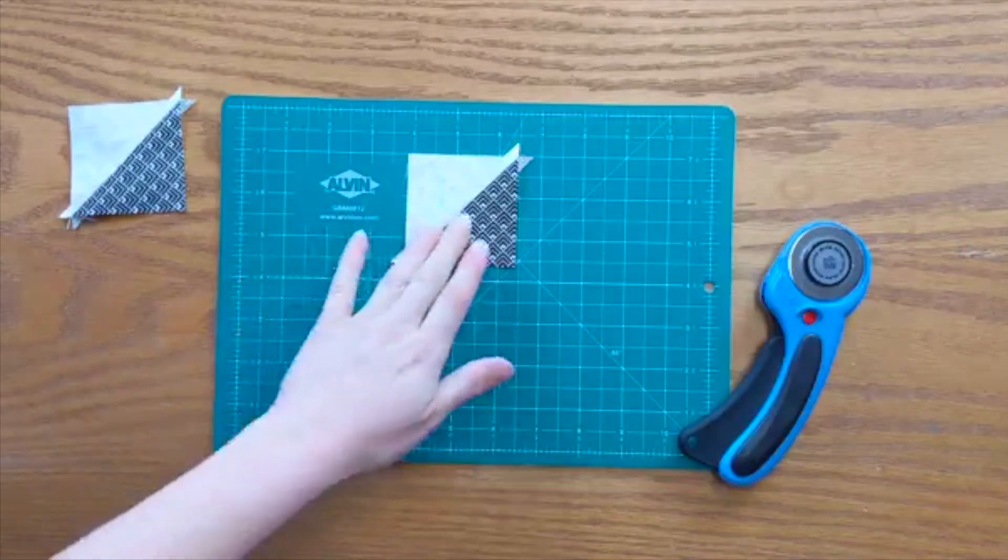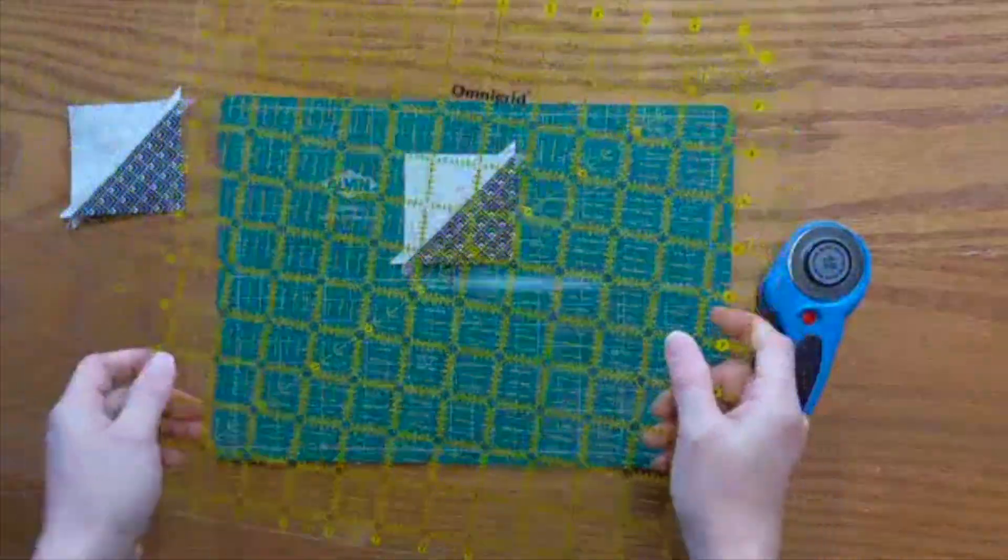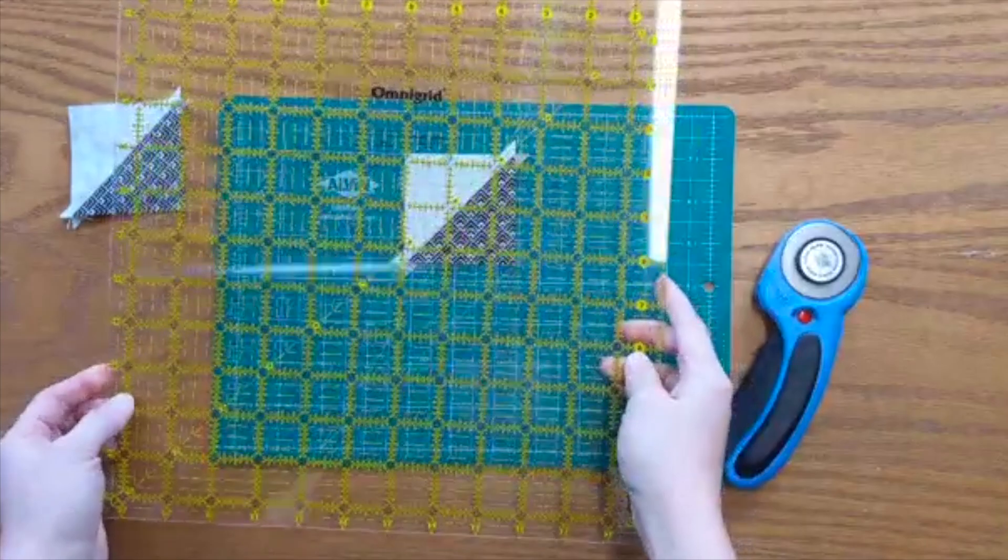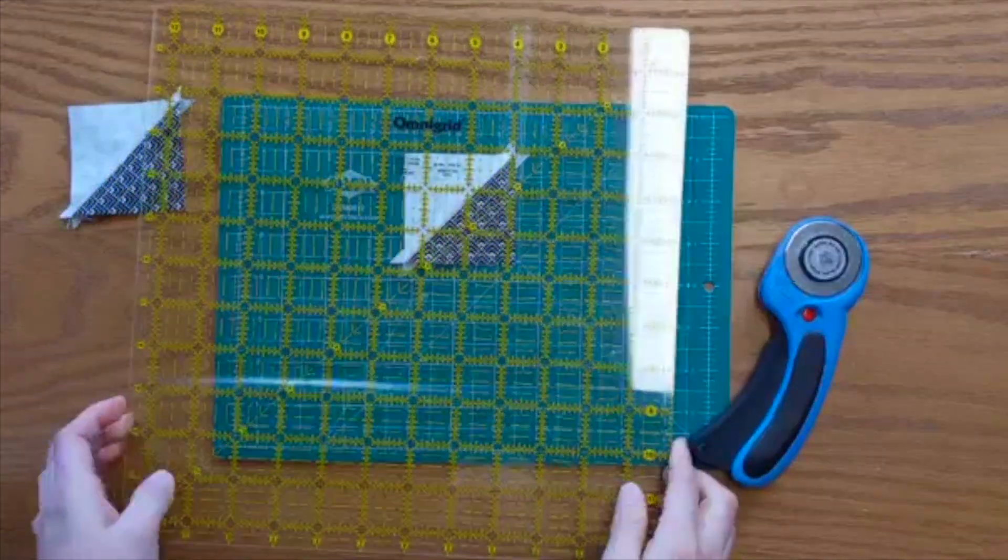I'm going to show you how to trim your half square triangles using a square ruler. I'm using a comically large ruler for my little cutting mat, but this is the size that I would recommend.